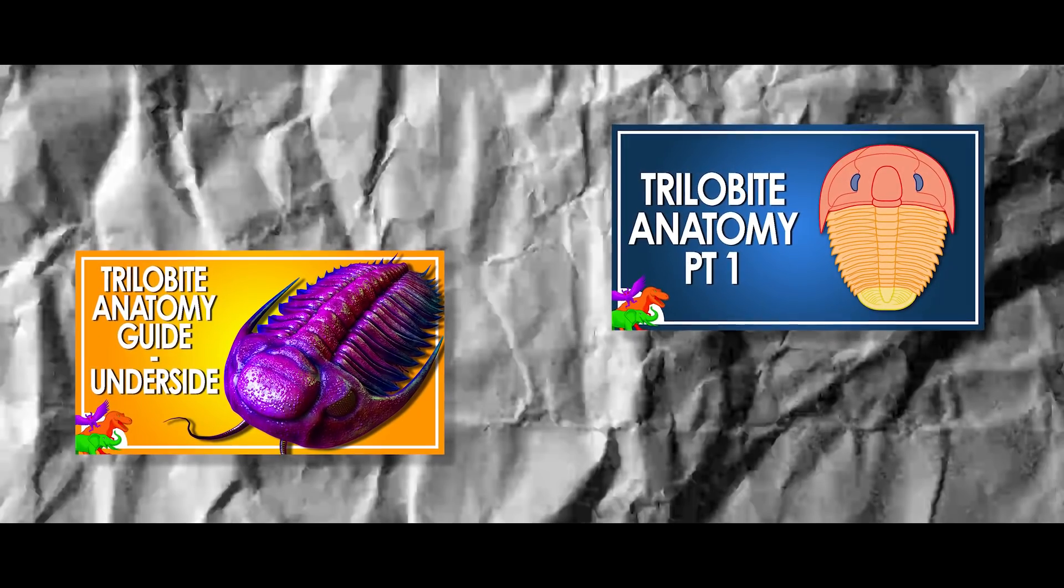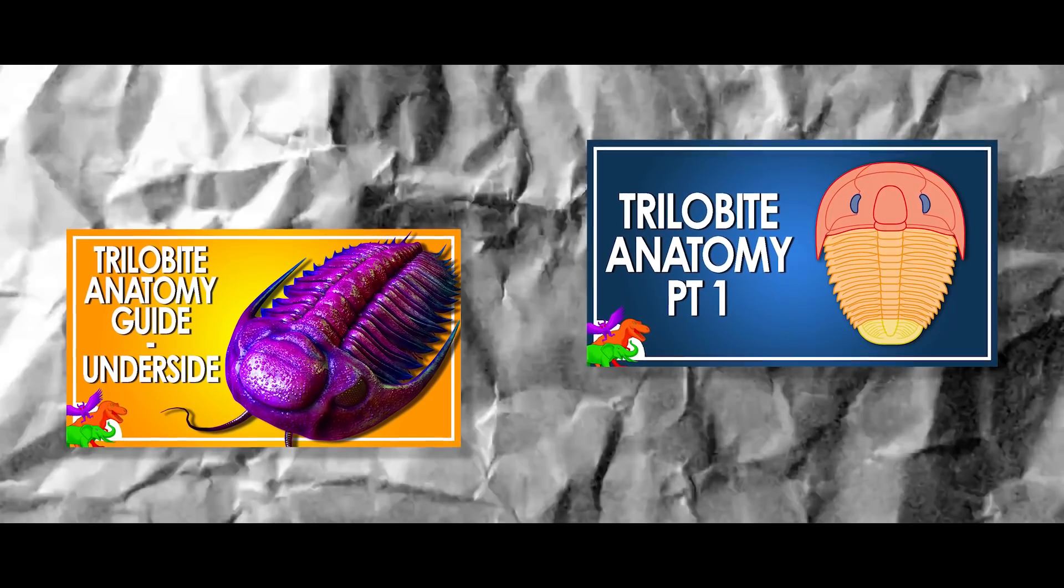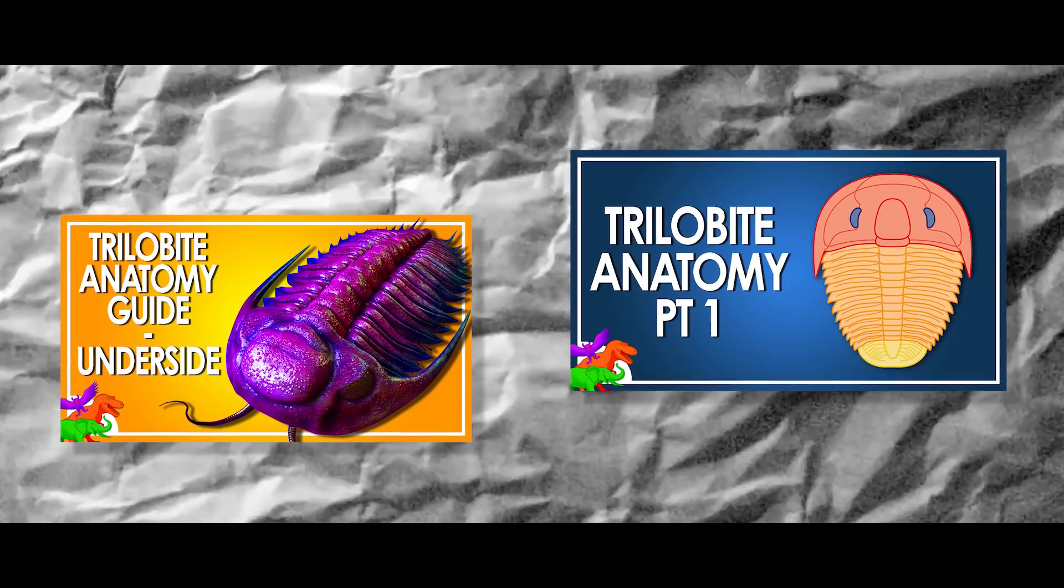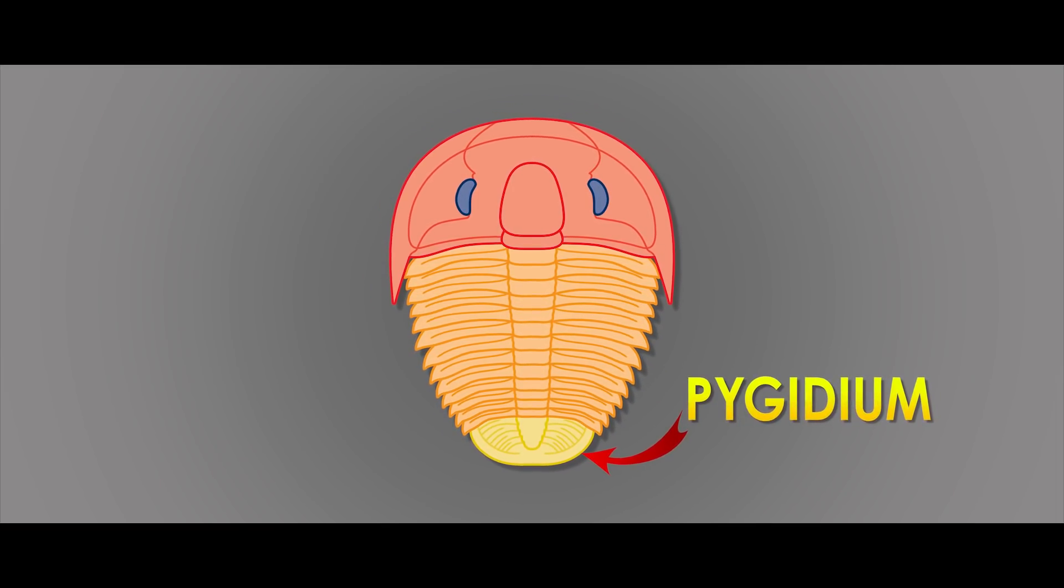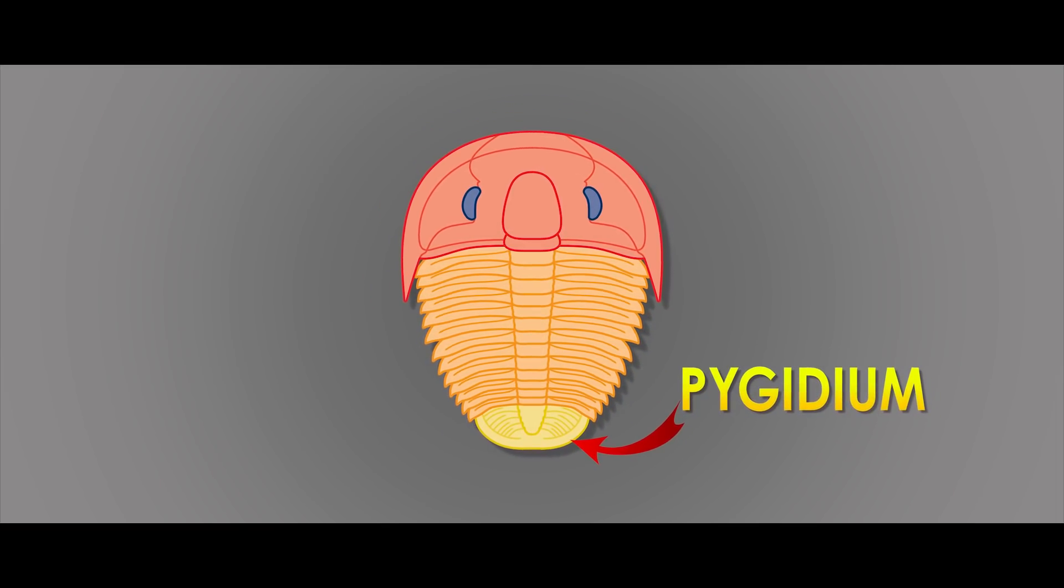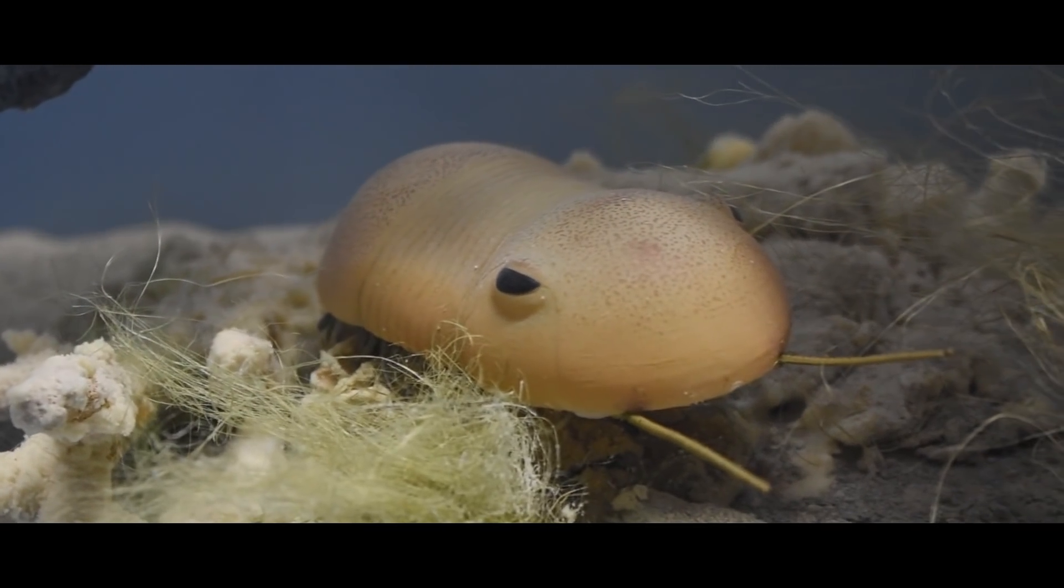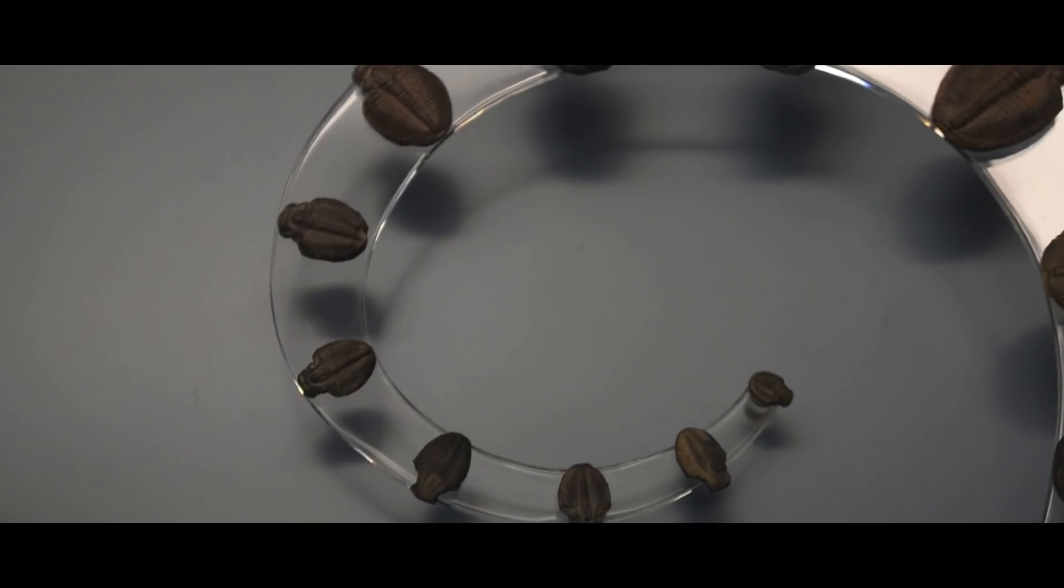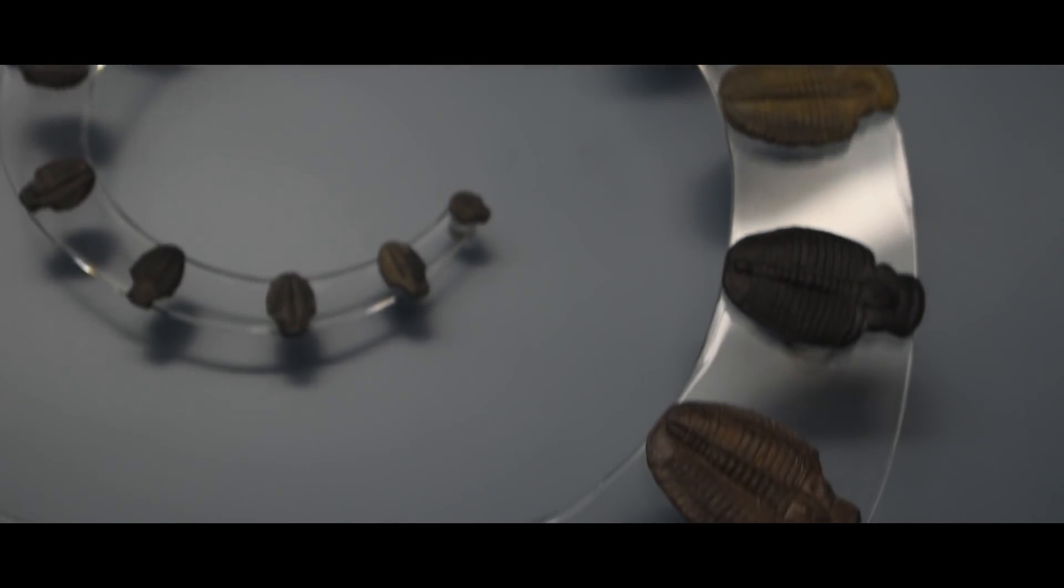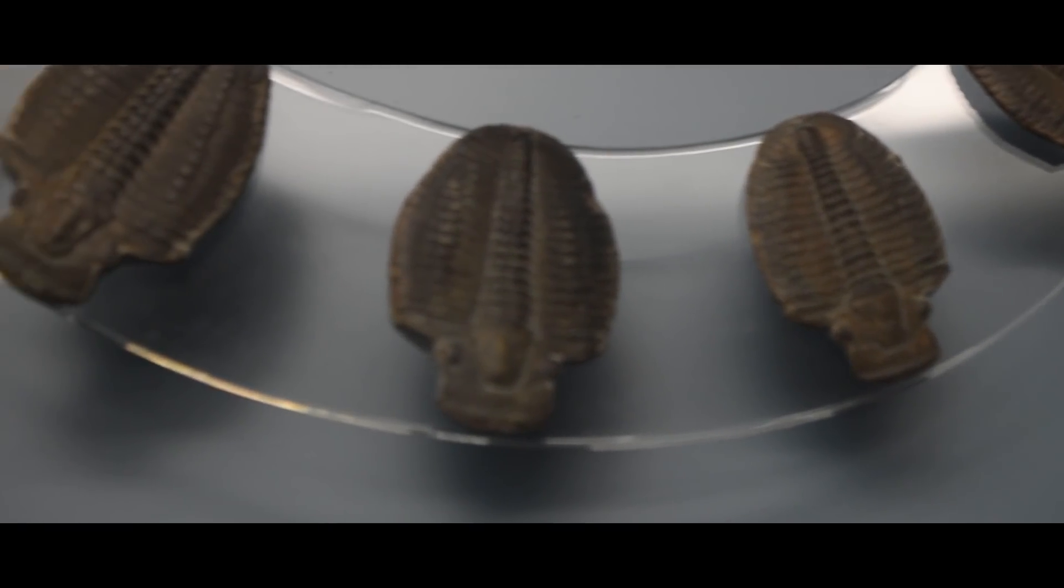If you manage to find my highly underrated trilobite videos, you'll know what a pygidium is, but to refresh, the pygidium is a hardened shell that covers the back end of trilobites and some other arthropods. It's not quite a telson, but you could think of it as a short rounded tail. In trilobites, it functioned as protection and to help roll up and roll out.